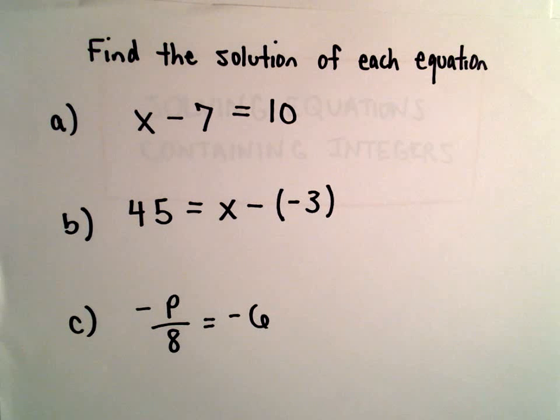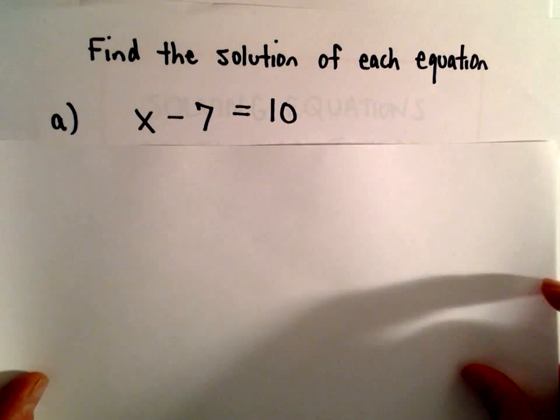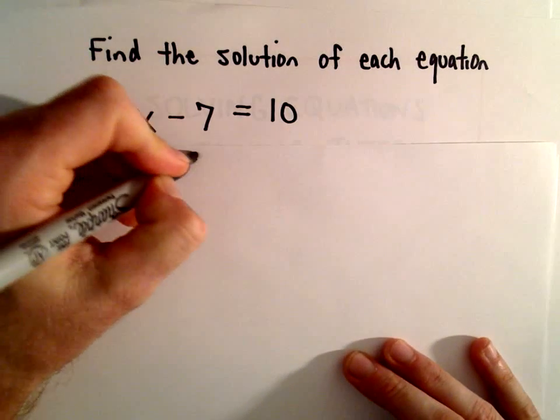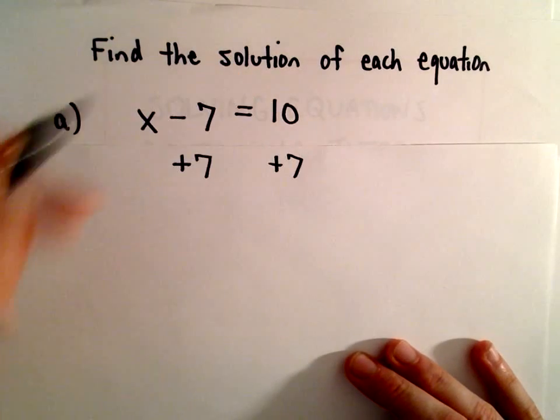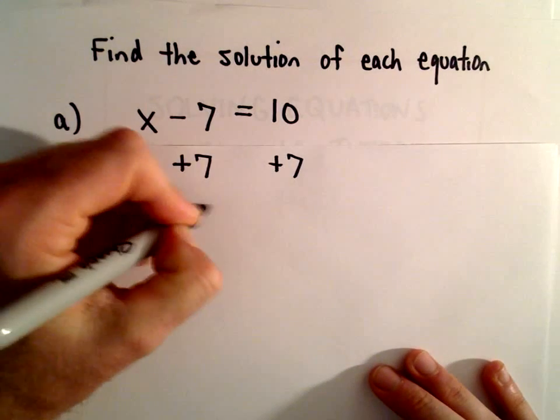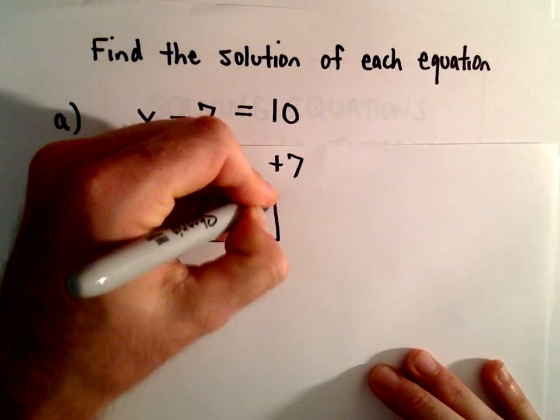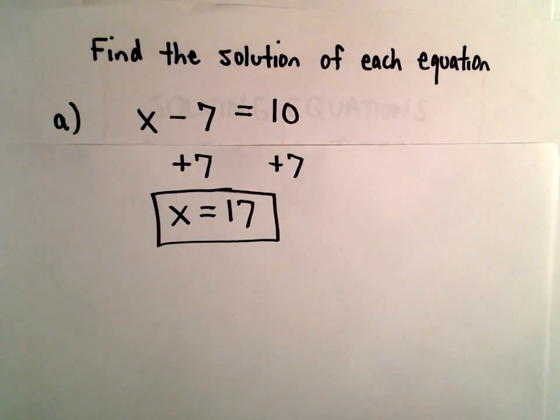In part A we have x minus 7 equals 10. To get x by itself, since we're subtracting 7, we'll add 7 to both sides. We'll be left with x on the left side. 10 plus 7 is 17, and that's our solution to part A.